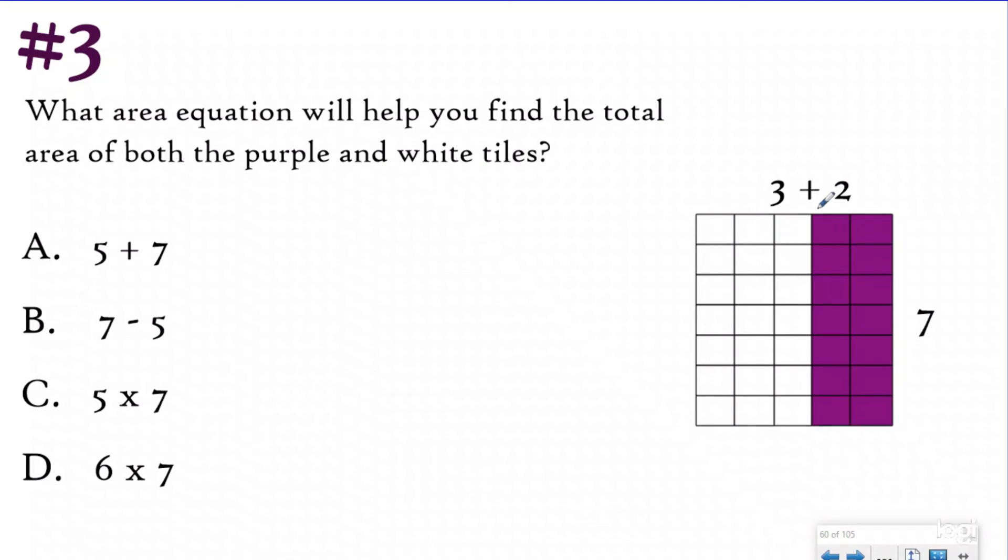This rectangle reminds me of my distributive property. Matter of fact, they have decomposed my width into three units and two units. So to solve for this area, if I was using my distributive property, I would have three groups of seven that tell me the area of the white section, put that in parentheses, then I have two groups of seven here.